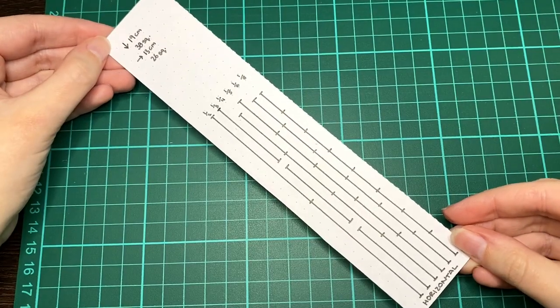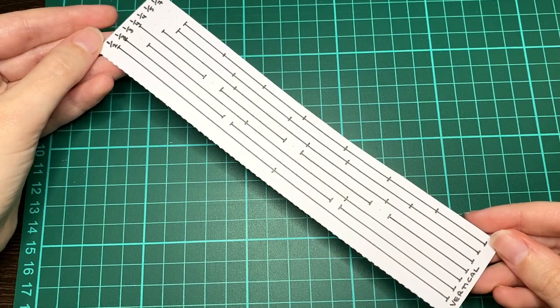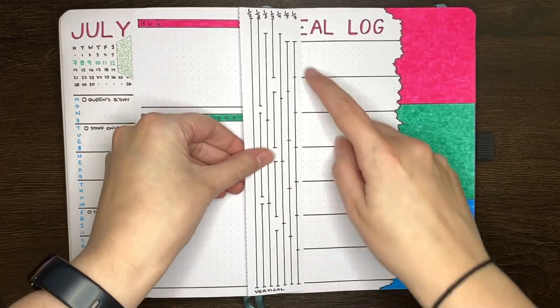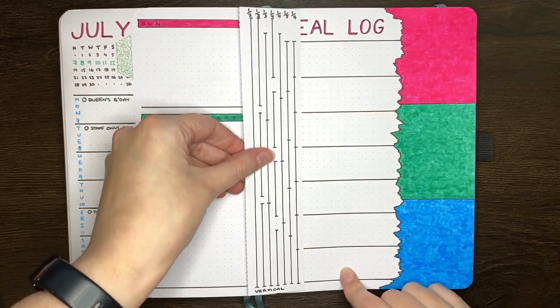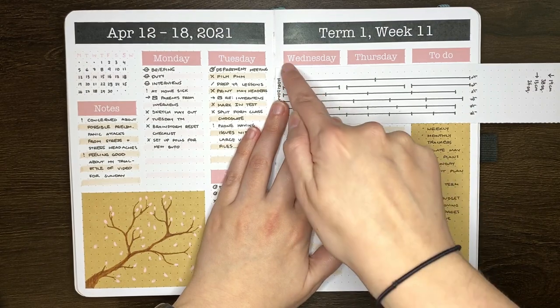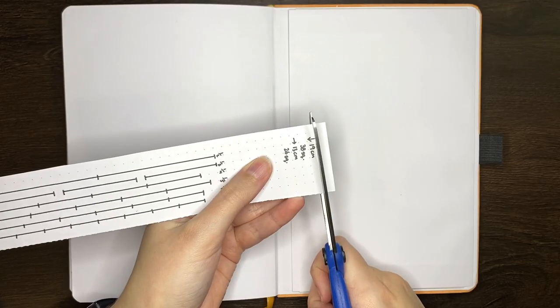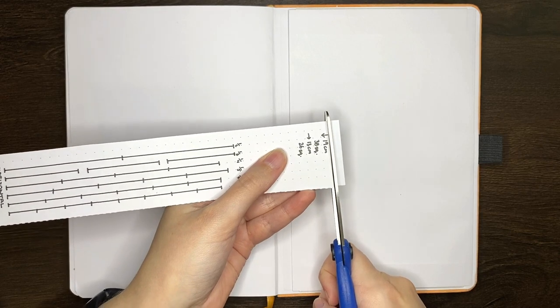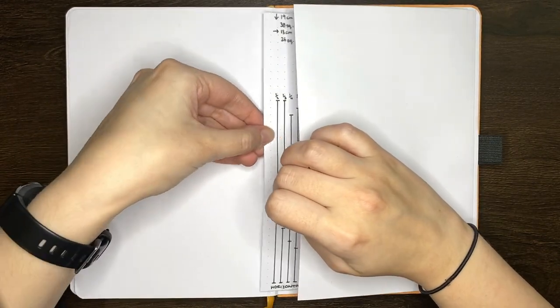This reference ruler is a really good option because of how movable it is. You can put it right next to or just on the page that you're working on to clearly see any divisions needed. If you also trim the ruler so it's just a little bit smaller than the full length of your journal, you'll also be able to store it in the gusseted pocket in the back.